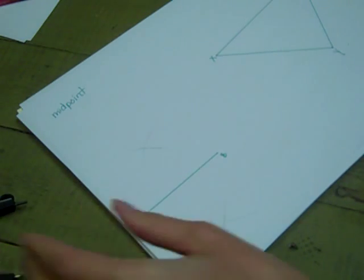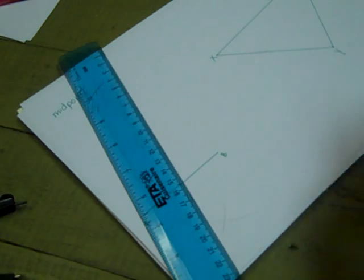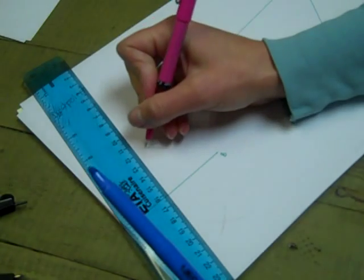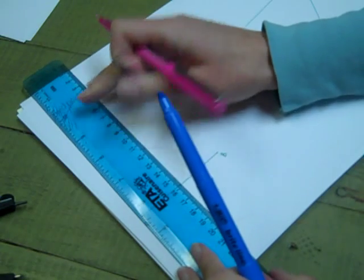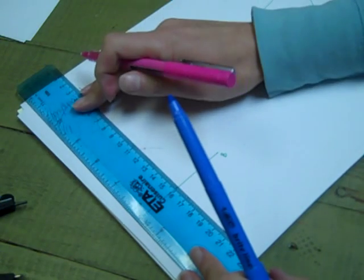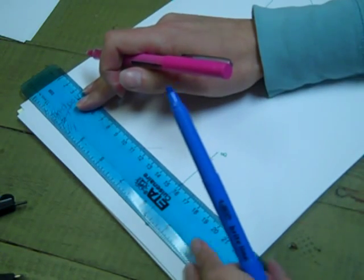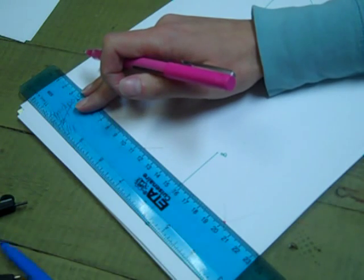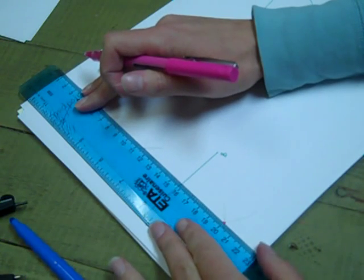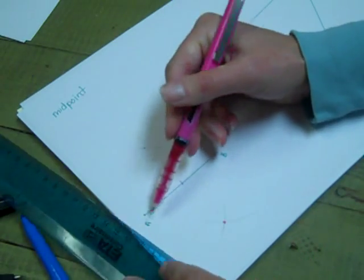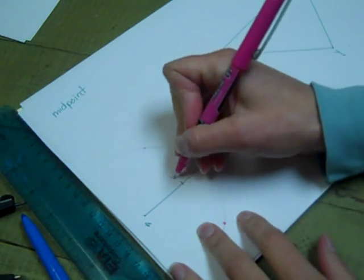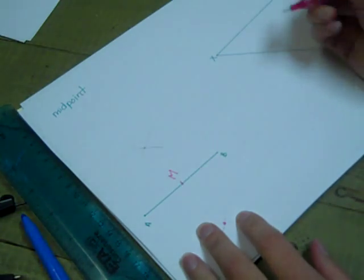This time, because we're only looking for the midpoint, you have your intersection points, and you are going to use your ruler to connect them, but this time we're not going to draw our line connecting them. We're just going to make a small point on line AB, and I will label that M for our midpoint.